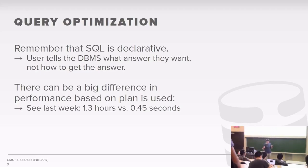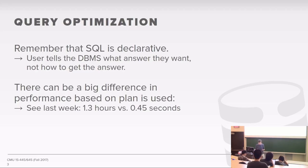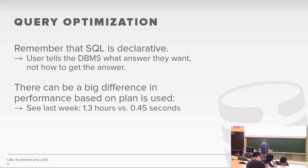This is generally called query planning or query optimization. The reason why we have to do this in a relational database system is because SQL is declarative. You don't say you want to do a hash join — you just say you want to do a join. It's up to the database system to figure out the best plan. As we saw in the last two lectures, there can be quite a difference in performance depending on the plan. In the worst case, a nested loop join could take 1.3 hours, but a nice in-memory hash join could take half a second.